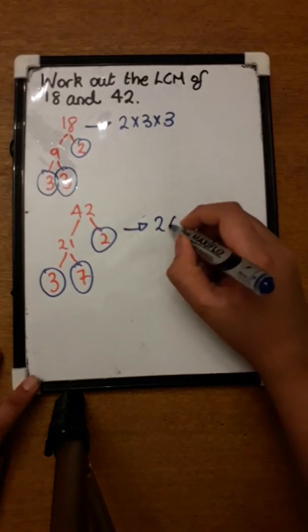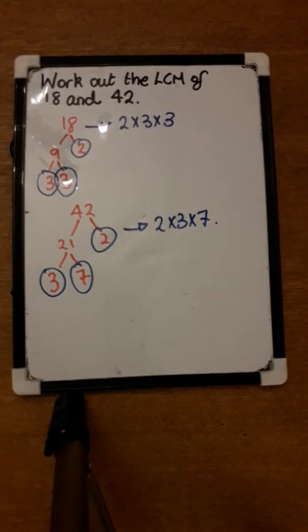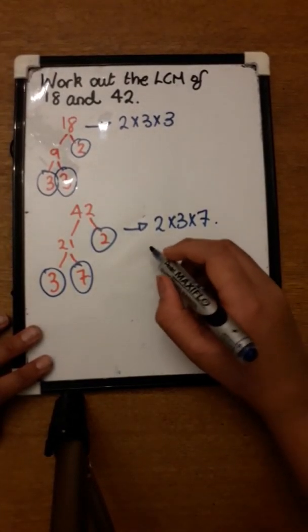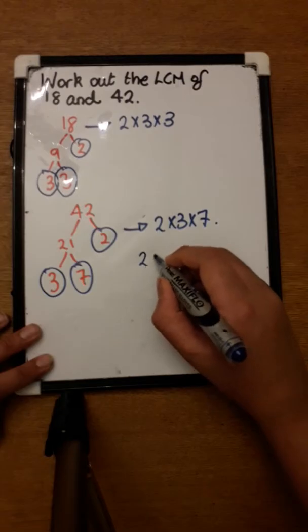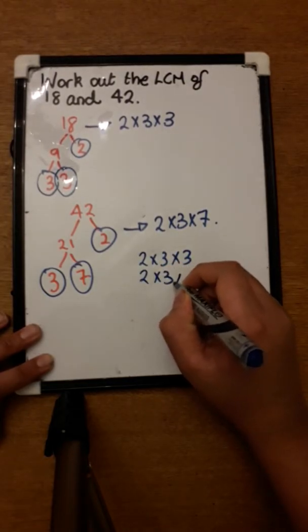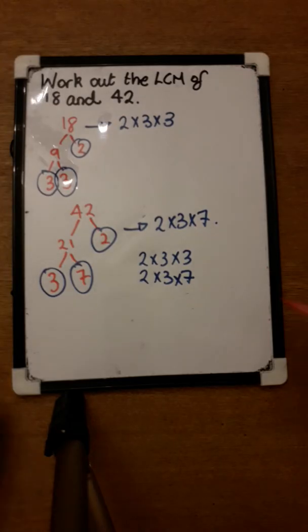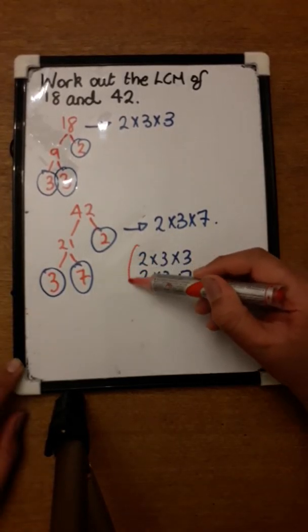Now to work out the LCM, I'll group them together: 2 times 3 times 3 and 2 times 3 times 7. Now what I'll do is circle the like terms—the same number that appears twice. Two appears twice, so that will count as one pair.